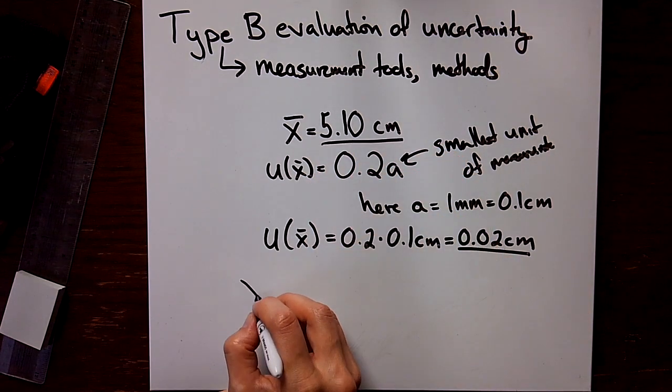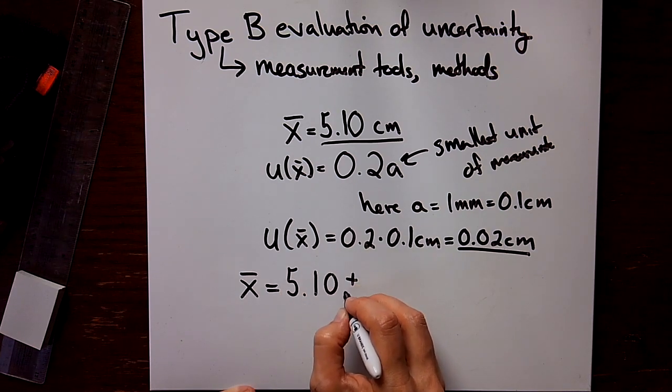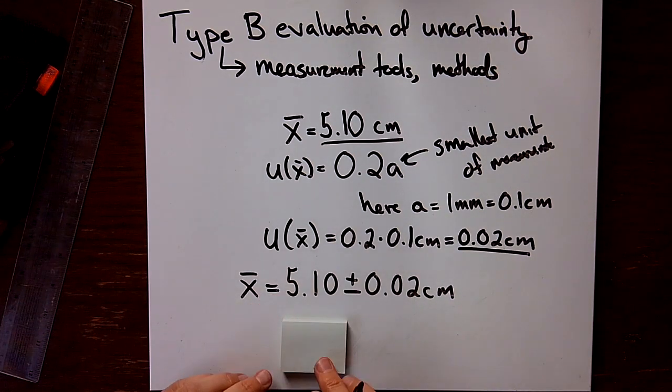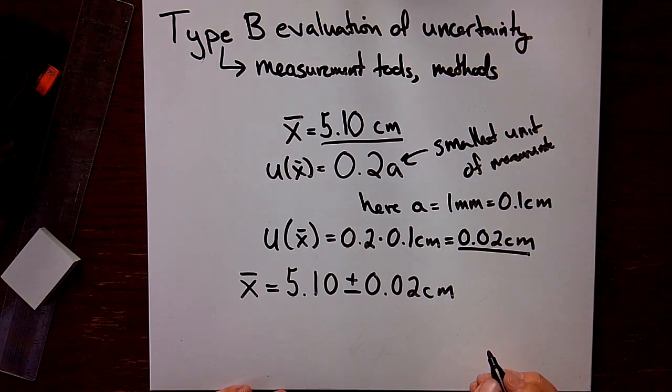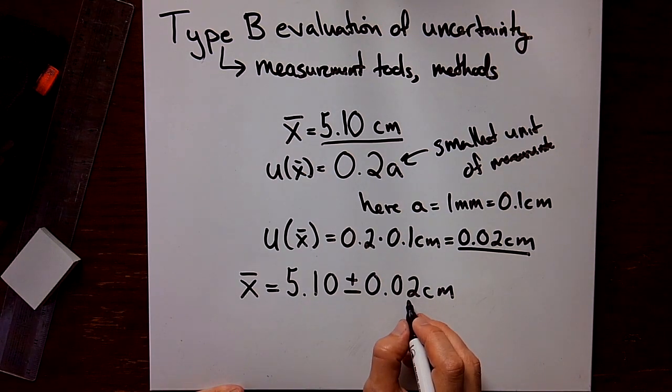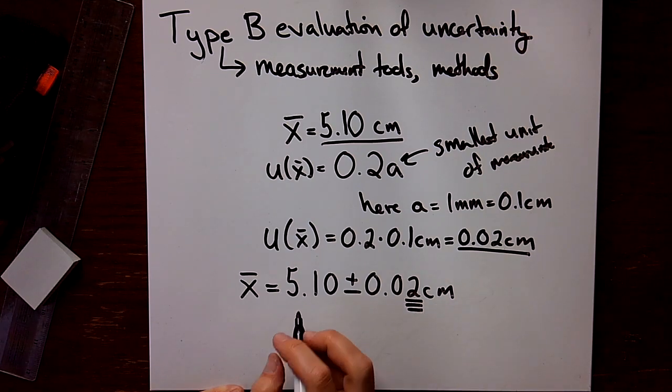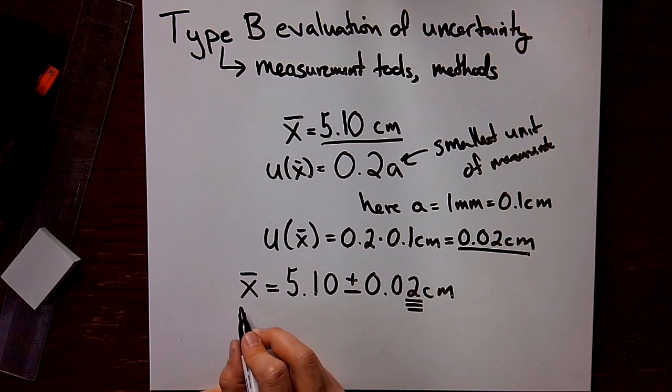I can write this together as my guess is 5.10 plus or minus 0.02 centimeters. That is my best guess for the value and the uncertainty of the width of this little bunch of post-it notes. Double check I've got the sig figures right. Remember, we get one significant figure in uncertainty, except if it itself is a one. Two is our only sig fig. For the value, we need to be the same decimal place as we are for the uncertainty. We're in the hundredths of centimeters for the uncertainty, and we report it out to the hundredths of centimeters for the value as well.